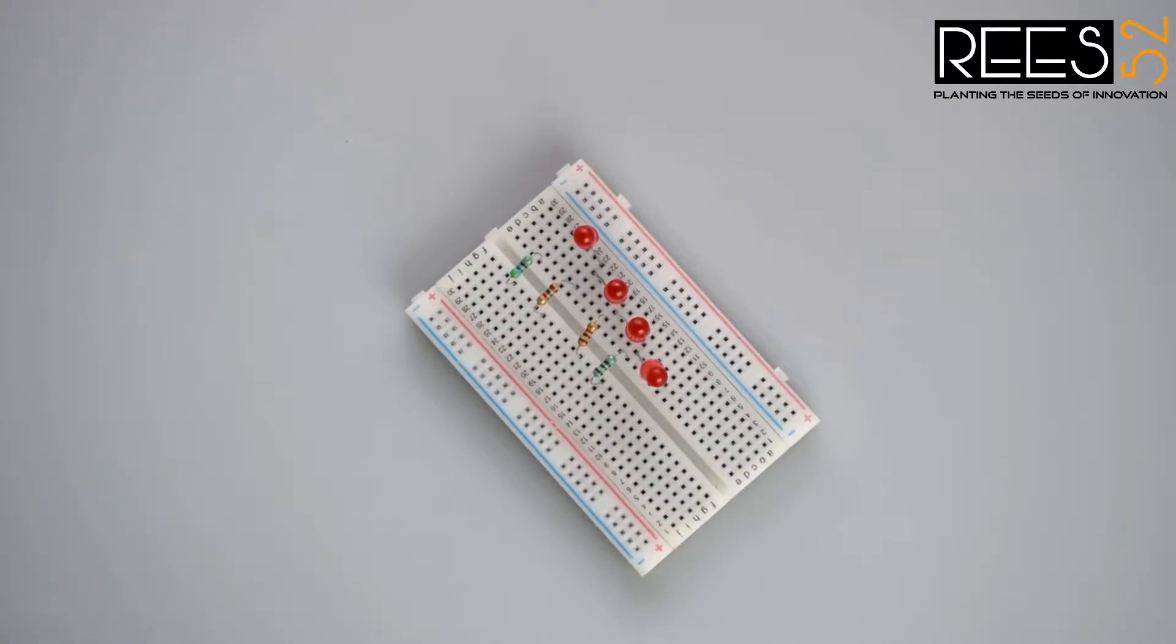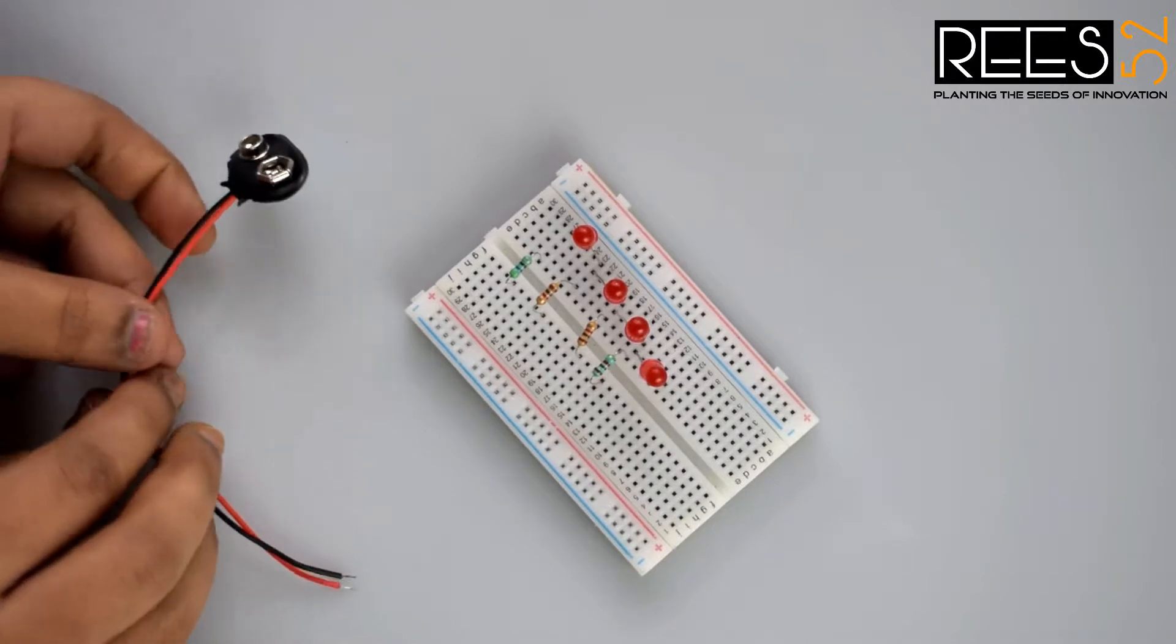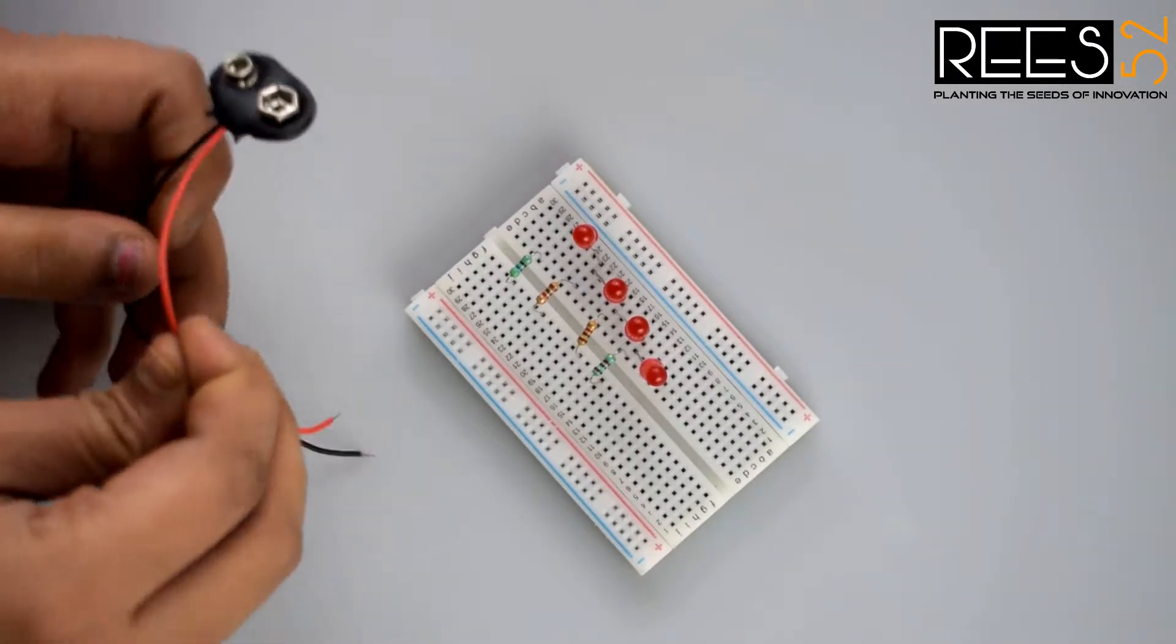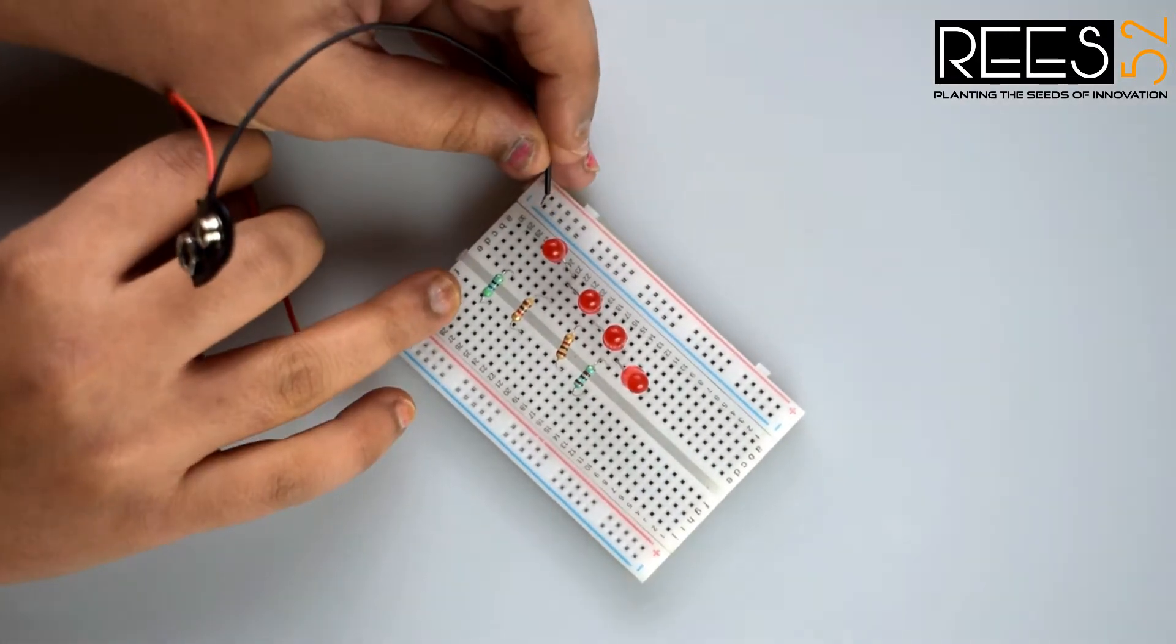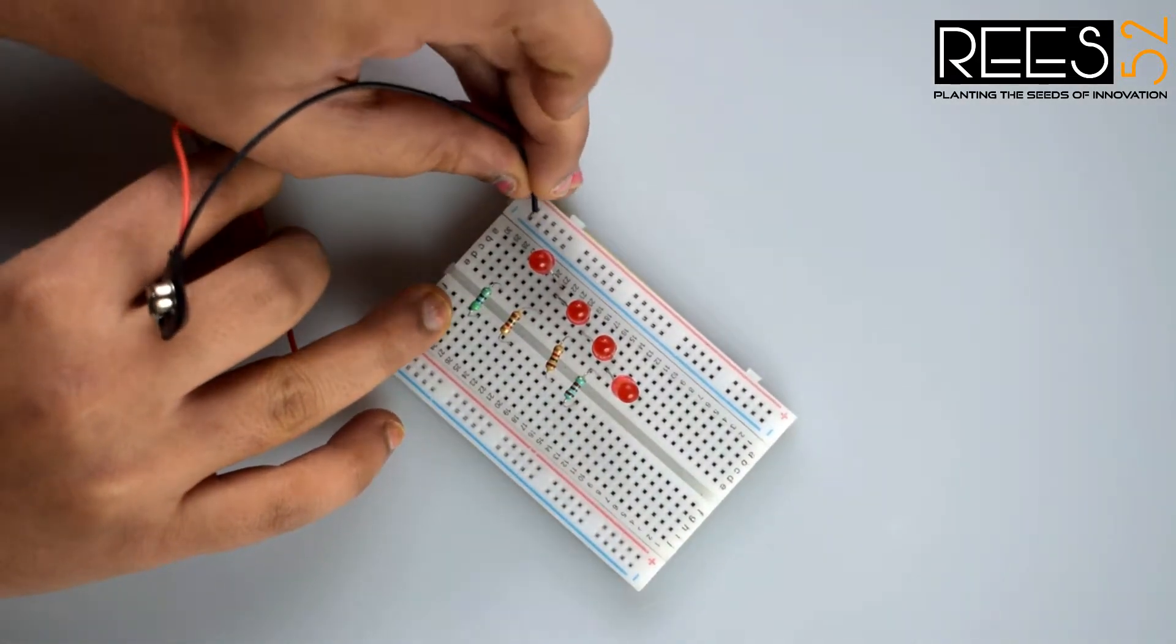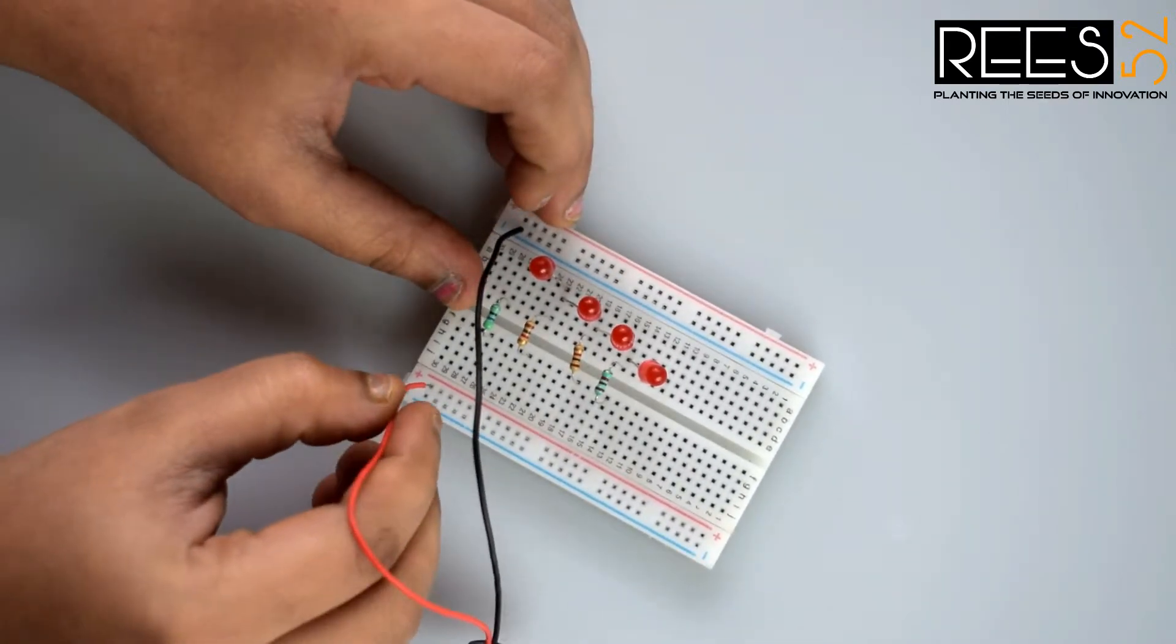Now connect positive and negative wire to the breadboard with snapper. Connect it with the negative wire of snapper and positive wire of snapper.